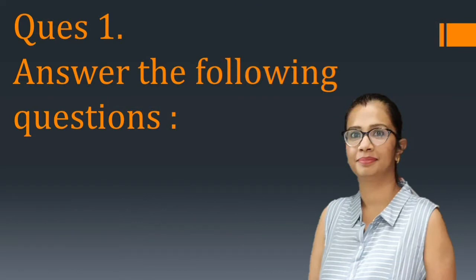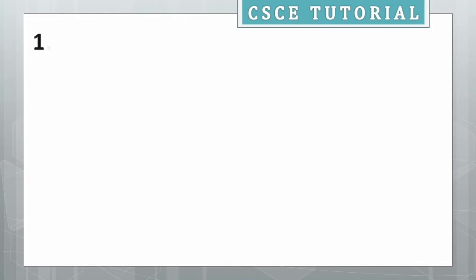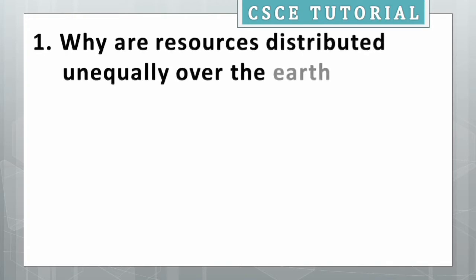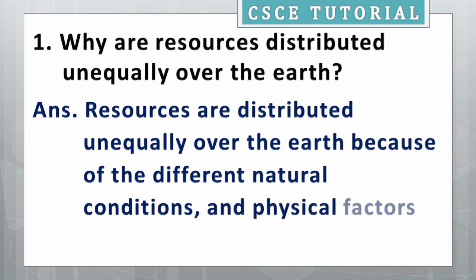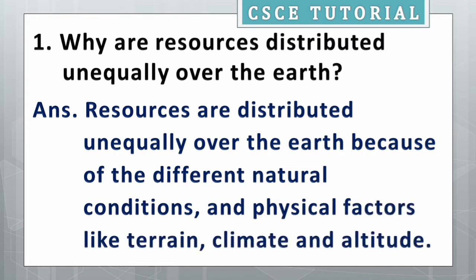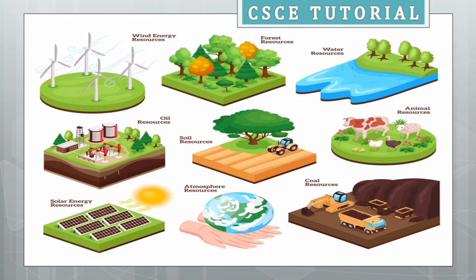First question is: why are resources distributed unequally over the earth? Its answer is resources are distributed unequally over the earth because of the different natural conditions and physical factors like terrain, climate and altitude. As you can see in the picture, there are various types of resources available on various parts of the earth, and these resources are unequally distributed.